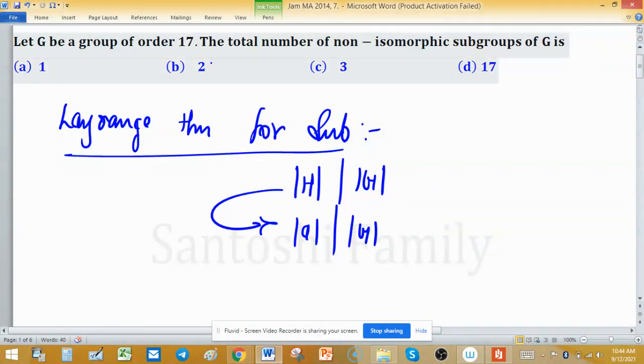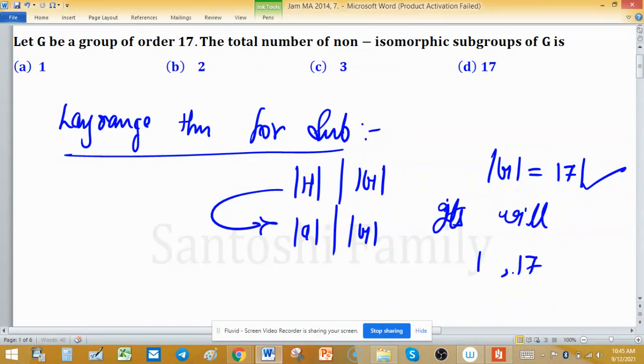Let G be a group of order 17. The order of G is equal to 17. Its subgroups will have order 1 and 17, because 17 is only divisible by 1 and 17, since it is a prime number. Therefore, the total number of non-isomorphic subgroups are 2.